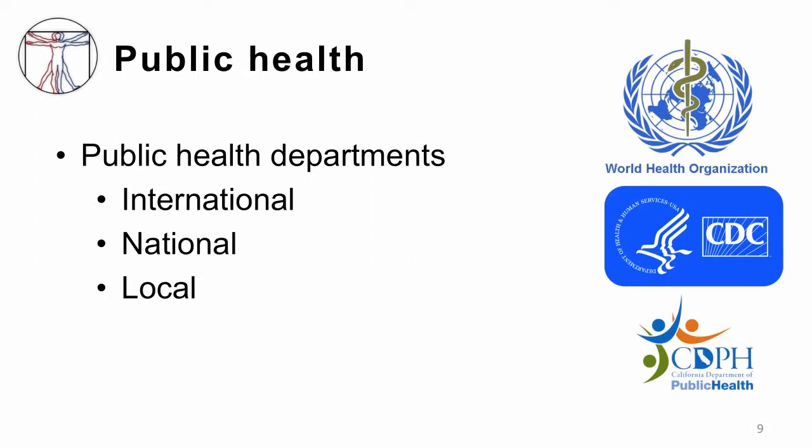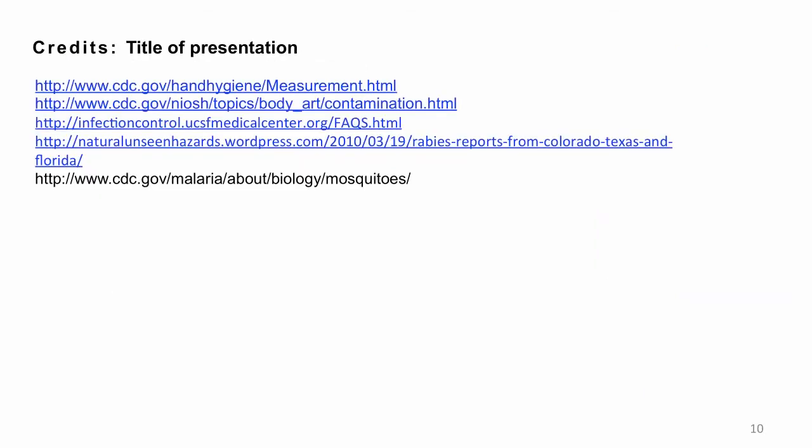Our last and very important line of defense is our public health departments. There are public health departments at the international level, like the World Health Organization, which helps mount global responses to things like the Ebola epidemic in West Africa. At the national level, the Centers for Disease Control and Prevention helps with outbreaks and prevention of infections nationally. Locally, there are city and state departments — for example, the California Department of Public Health and the San Francisco Department of Public Health. As you move on to caring for patients, you'll likely be in contact with both city and state departments of public health. This concludes my session on prevention and clinical infectious diseases.